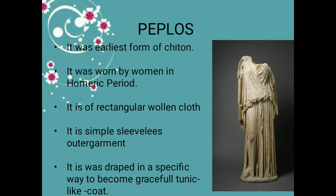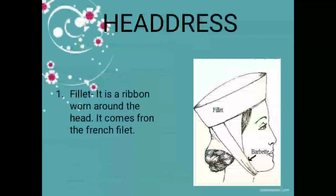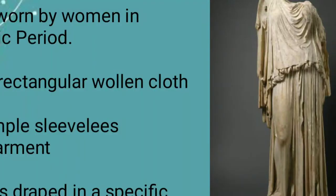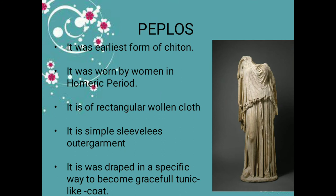Next is the peplos. The peplos is the earliest form of the chiton, worn by ladies in the Homeric period. It is also a rectangular woolen garment — a simple sleeveless garment. It was draped in a specific way to become a graceful tunic-like coat with beautiful folds.